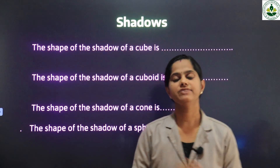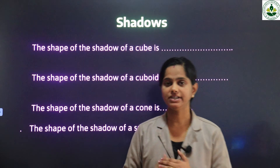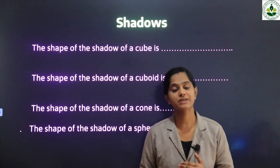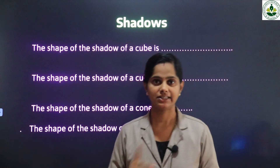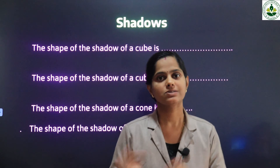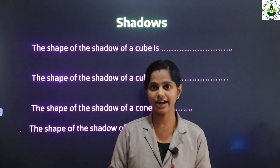From this we can see that the shapes of the shadows of solid shapes are always flat shapes. The shape of the shadow of solid shapes are always flat shapes.